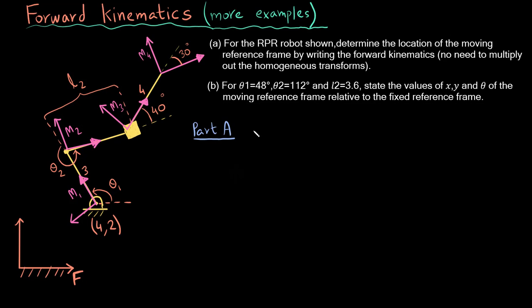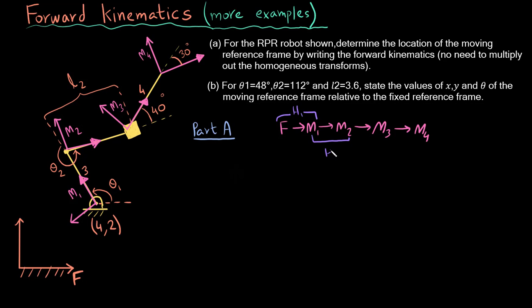In Part a, we need to go from the fixed frame to M1, from M1 to M2, from M2 to M3, and finally to M4. I will use homogeneous transforms H1, H2, H3, and H4. The overall homogeneous transform is H1 × H2 × H3 × H4.